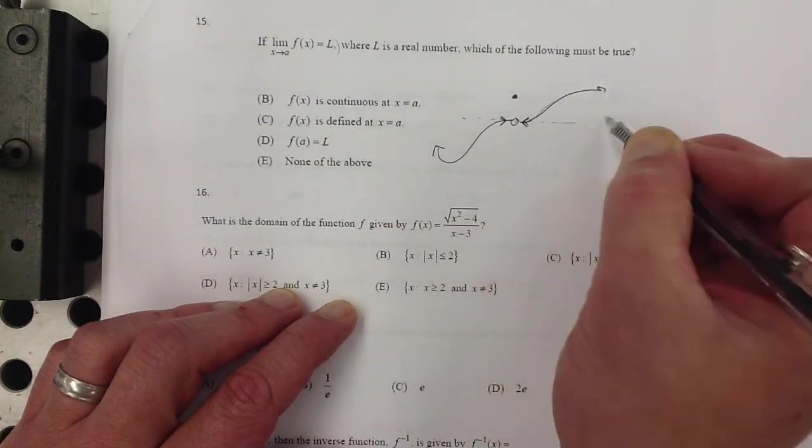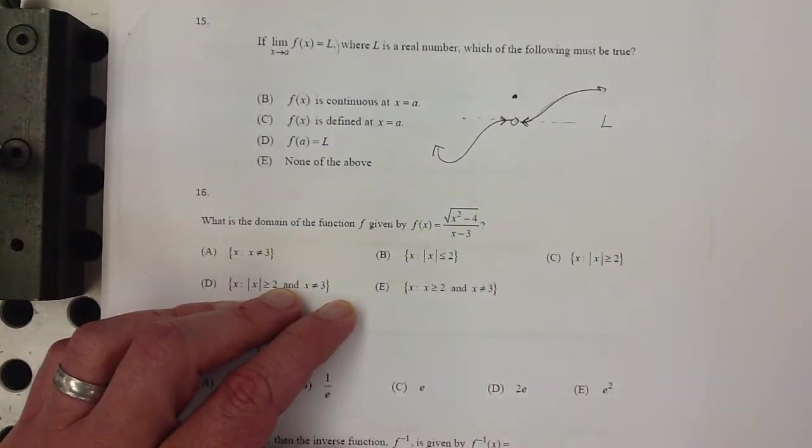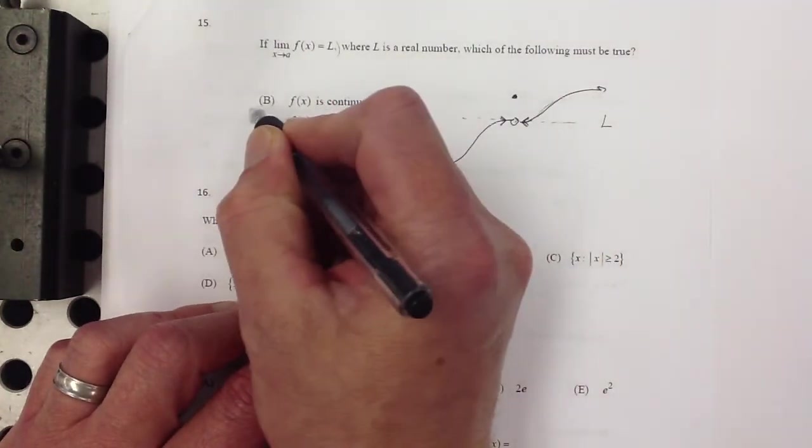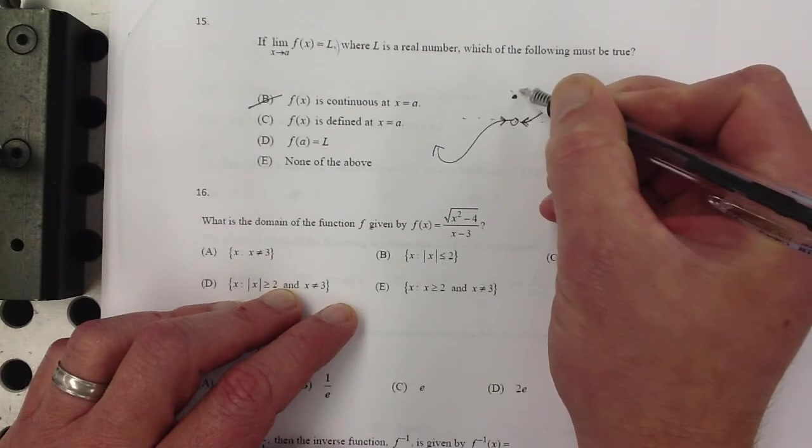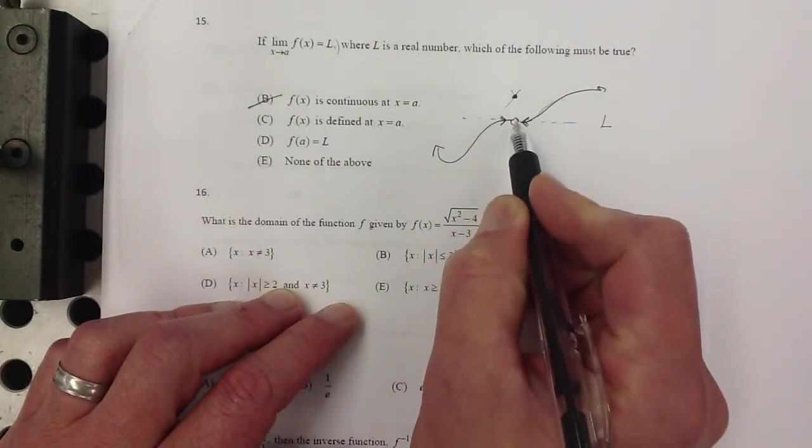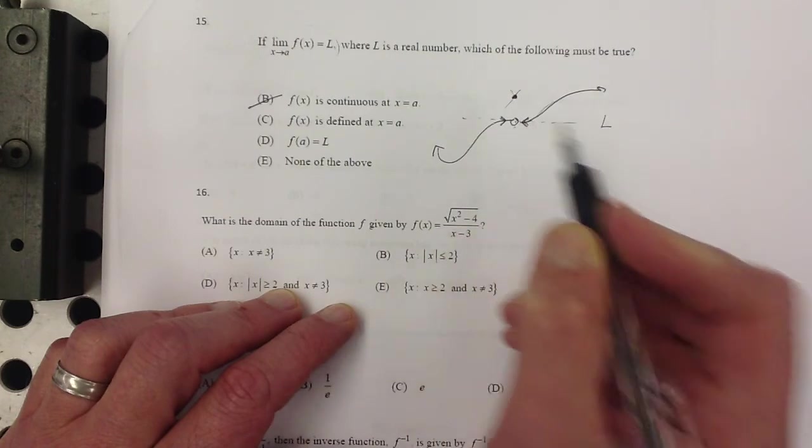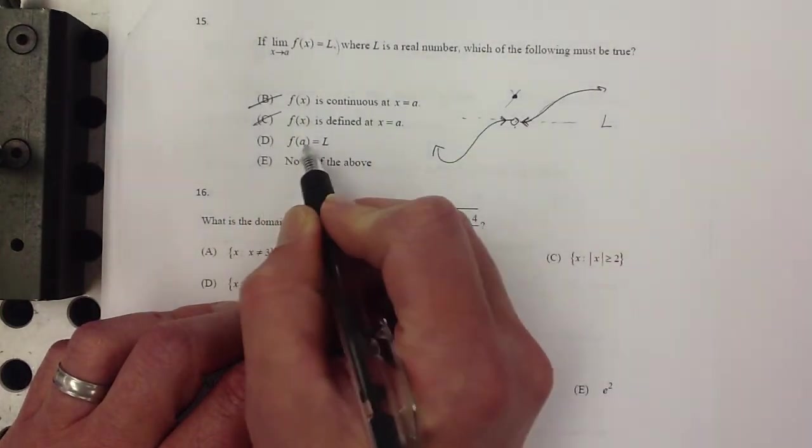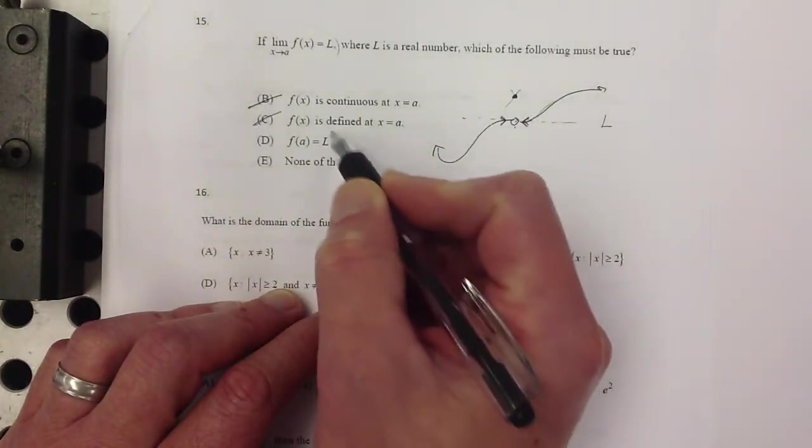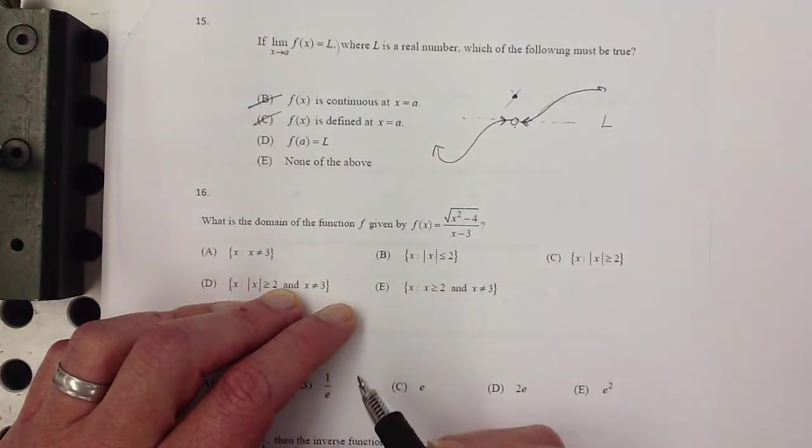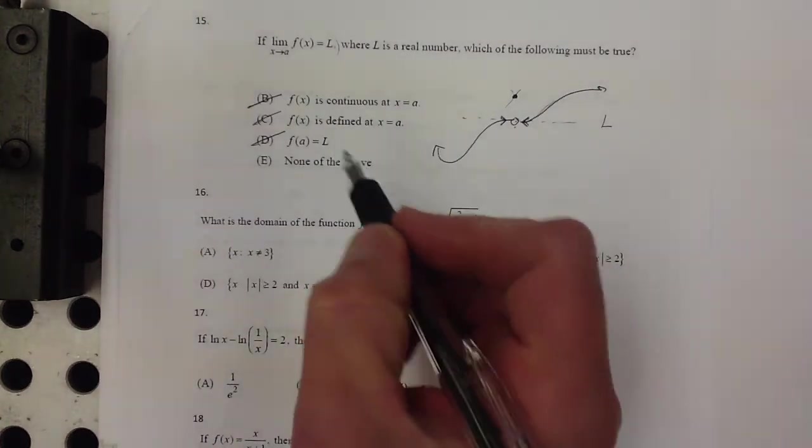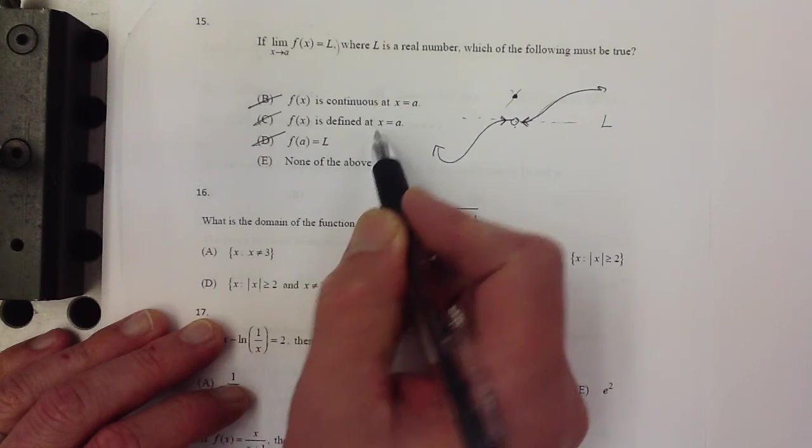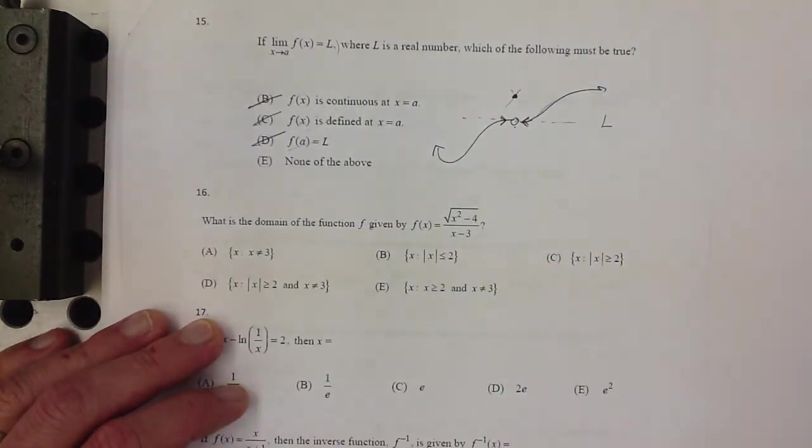So in this case, that limit, if this was at L, this limit would exist. So it does not have to be continuous. It could be this situation. And, in fact, even if that point weren't there at all, it doesn't have to be defined there. There does not even have to be a point there. That's not true. f(a) equals L, that's kind of like saying, that's a very similar statement to those two. So none of those actually have to be true. The point does not even have to be defined at all, right? Which rules out both of those. And it does not have to be continuous there. So E is the correct answer.